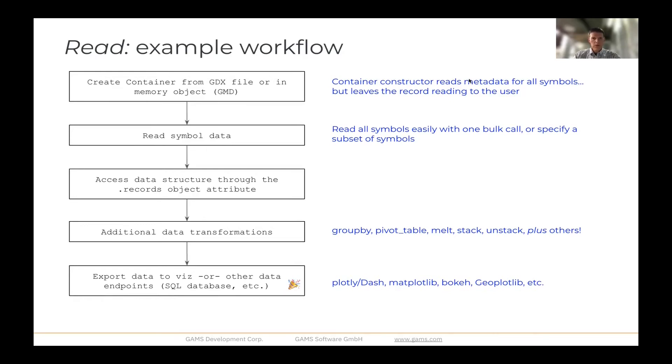From there, you can do any number of different convenient data transformations. I've listed a few here that are common in pandas. So group by is able to aggregate data, pivot forming pivot tables, melting things down. These are all really standard and performant data transformation methods that are available. And then you can take all of that new data or the transformed data and export it either to a visualization or some other data endpoint like a SQL database, also through pandas, all part of the standard IO tools that they have.